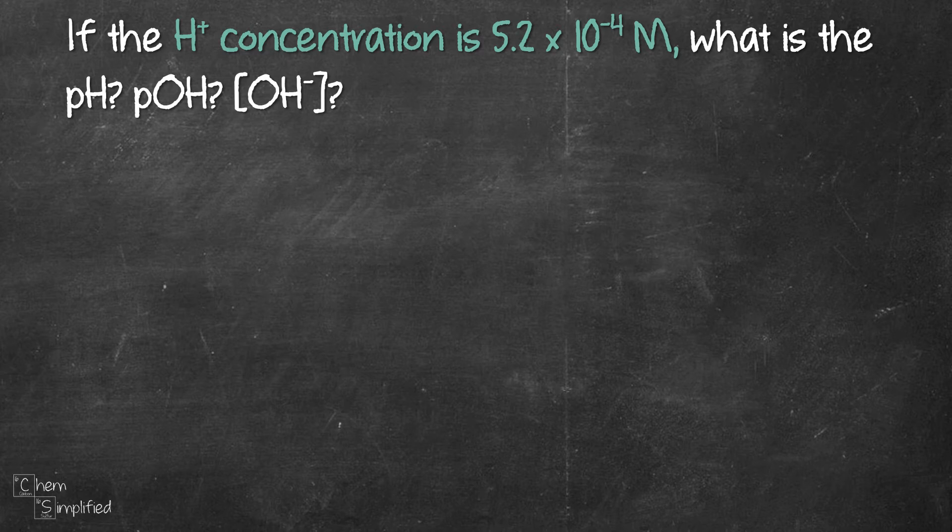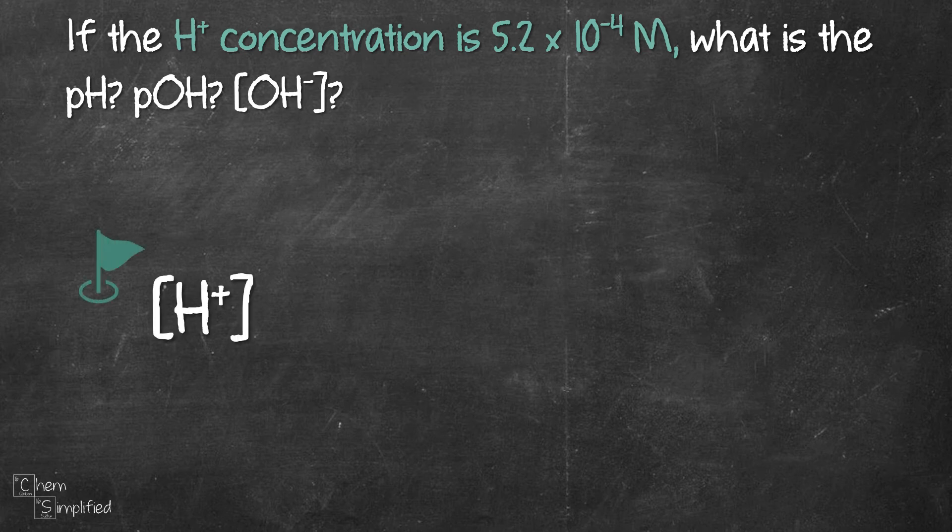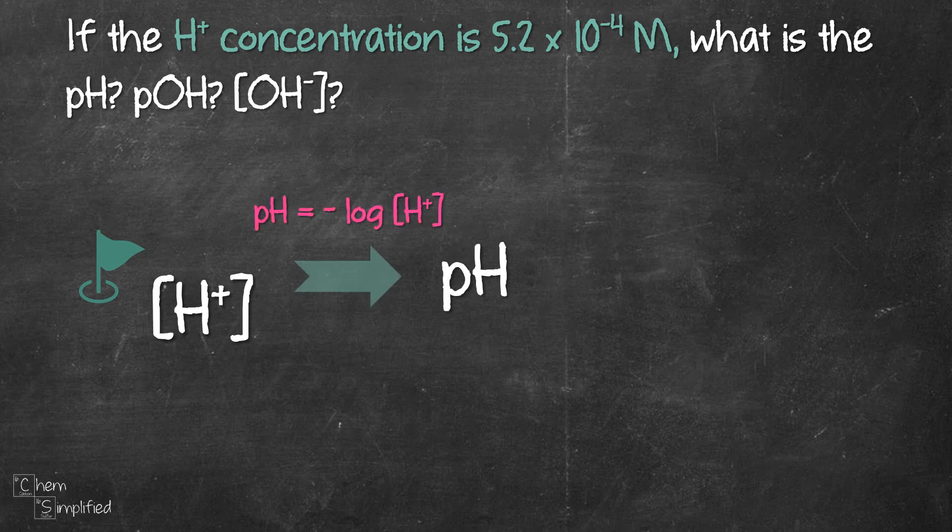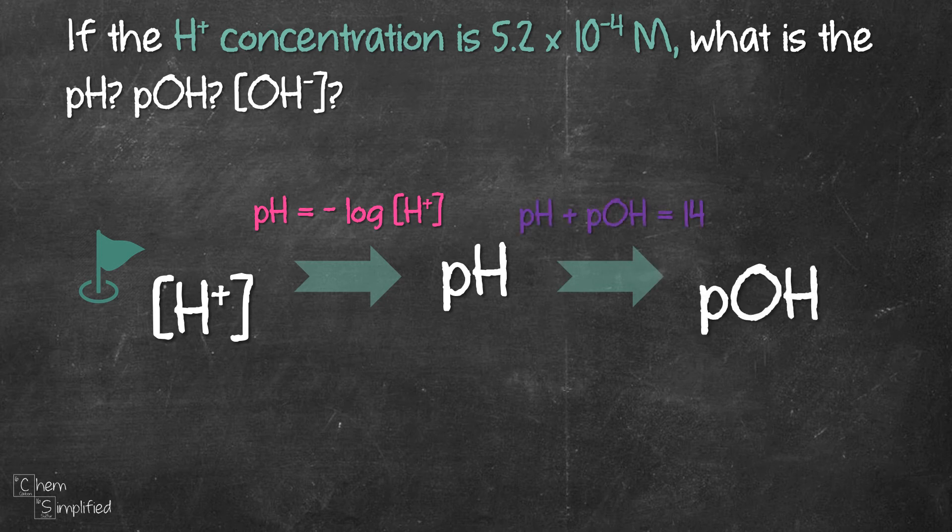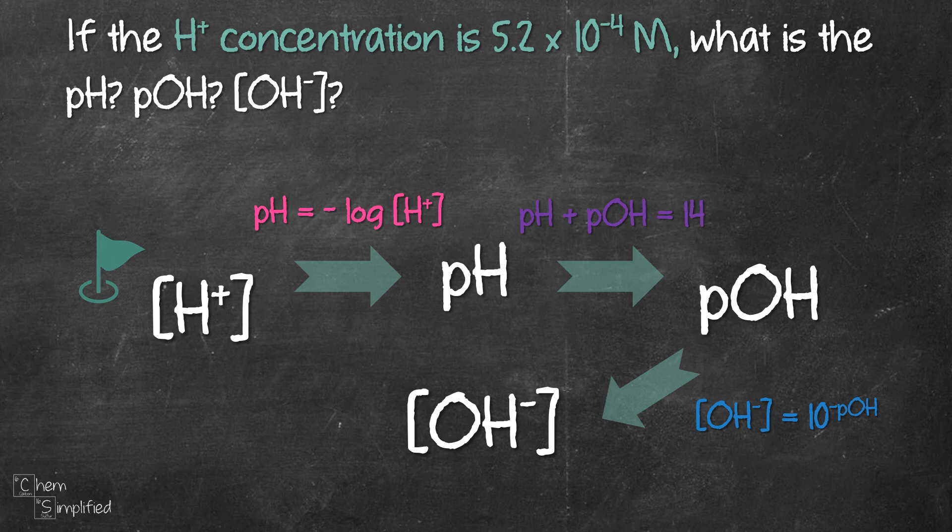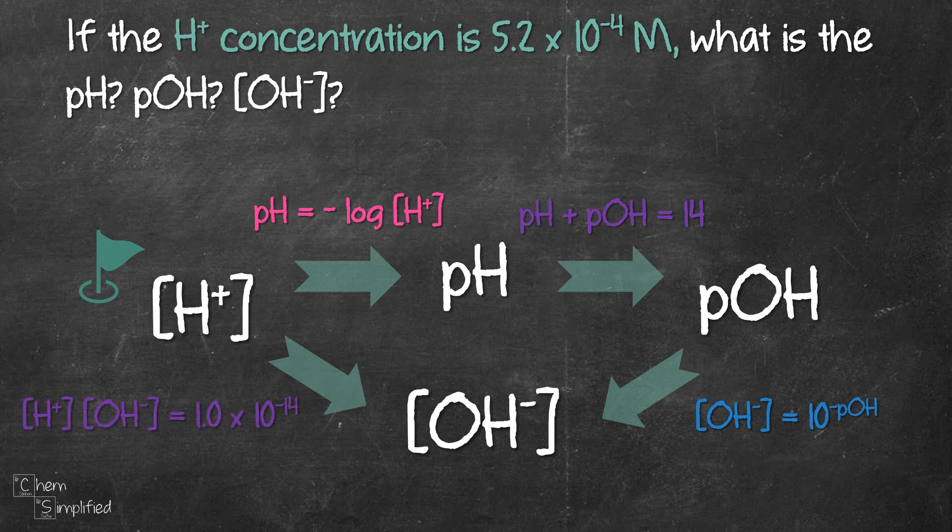To recap, here's the strategy we use to calculate the values for pH, pOH, and concentration of OH-. We started with the given concentration of H+ and found the value of pH. From the value of pH, we look for pOH, which we then use to find the concentration of hydroxide ion OH-. We can also find the concentration of that hydroxide ion directly from H+ if we wish.